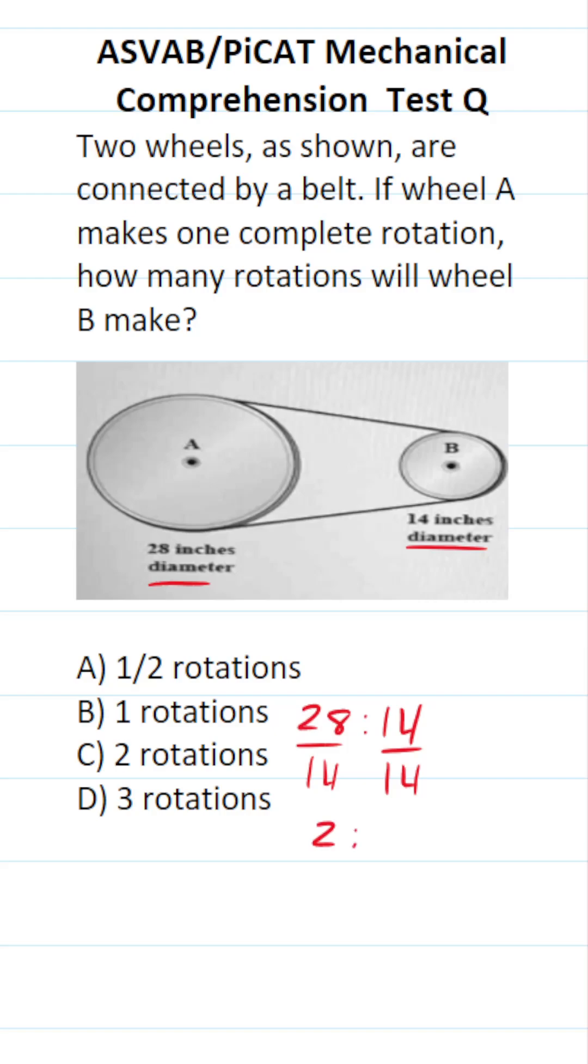28 divided by 14 is 2, and 14 divided by 14 is 1. So they have a gear ratio of 2 to 1.